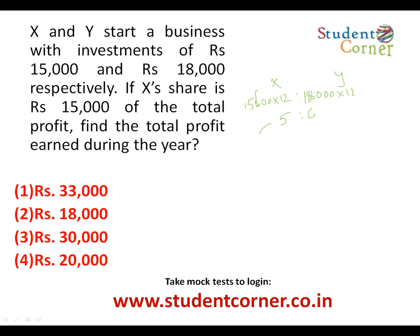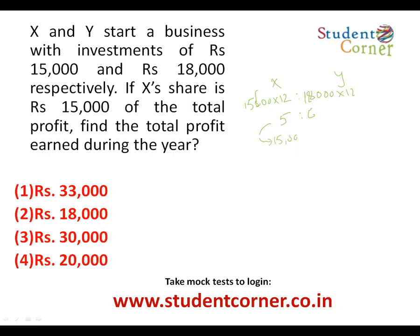X's share is five parts, which equals fifteen thousand rupees. If five parts is fifteen thousand, then each part is three thousand. So six parts — Y's share — is eighteen thousand. The total profit is fifteen thousand plus eighteen thousand, which equals thirty-three thousand rupees earned for the whole year.